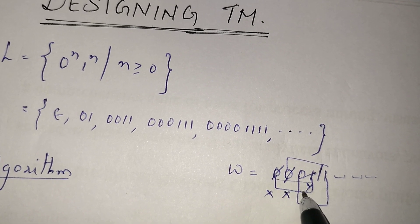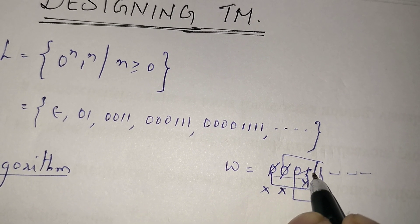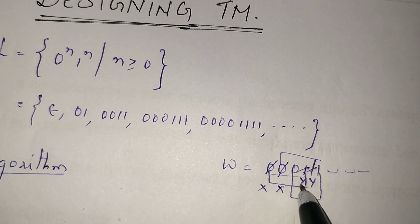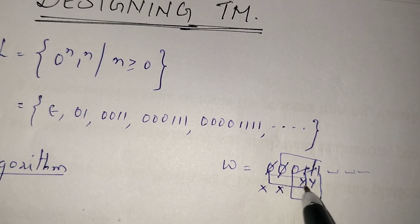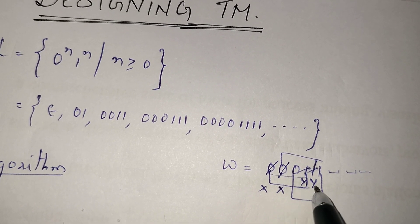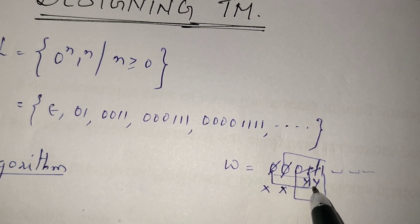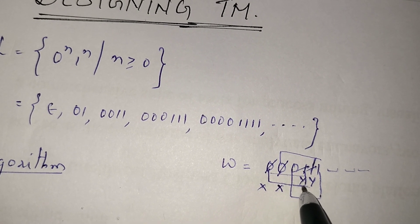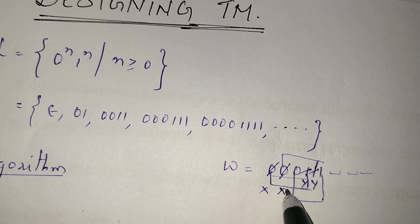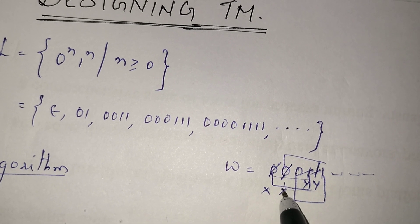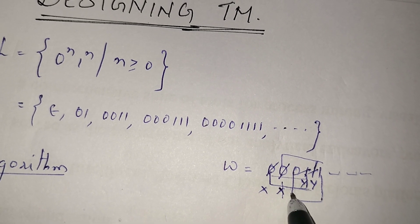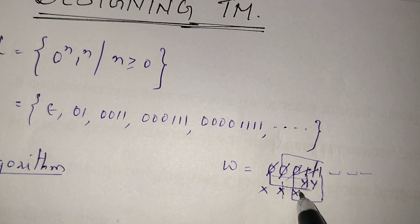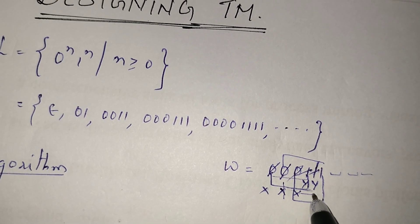Keep moving towards right until I see a 1. Whenever I see a 1, replace it with y. Keep moving towards left. While moving right or left, whatever we see, just keep as it is — don't rewrite. After replacing a 1 with y, move towards left until I see the last updated x symbol. Then move one step right and see a 0, replace it with x, and keep moving towards right. I will then see y.